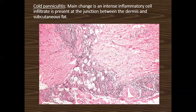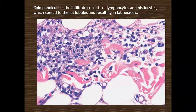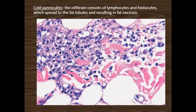This lymphocytic infiltrate involves the fat lobules, usually at the junction of dermis and subcutaneous fat. The lymphocytes surround the blood vessel and the fat. In lobular paniculitis especially, there will be fat necrosis, which manifests as loss of cellular details and loss of nuclei. There can be different types of fat necrosis.